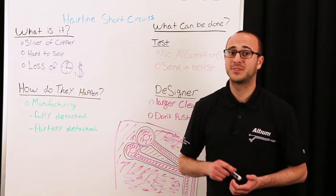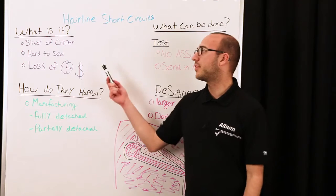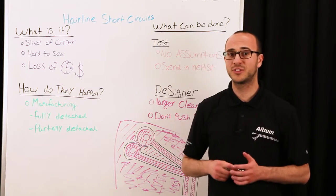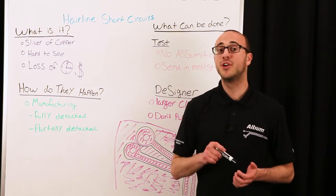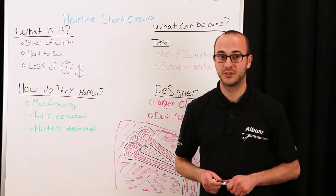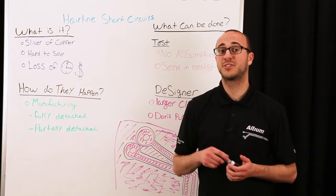Hairline short circuits can cause a lot of problems and a lot of headaches, but what are they? Hairline short circuits happen when a sliver of copper no wider than a strand of hair connects two unrelated signals. Because these slivers are so small,